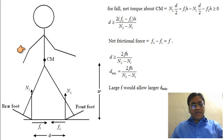Let's consider some state of walking. N1 and N2 are normal reactions. The rear foot pushes the ground in this direction. Ground applies force in rightward direction, F1, frictional force.